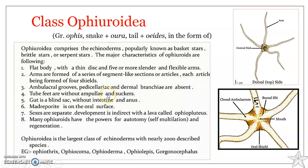Tube feet are present but they lack suction discs and ampullae. The extension of the tube feet is brought about by muscular contraction, unlike in asteroids. The madreporite is on the oral surface, so both the madreporite and the mouth are on the oral surface of the ophiuroids.